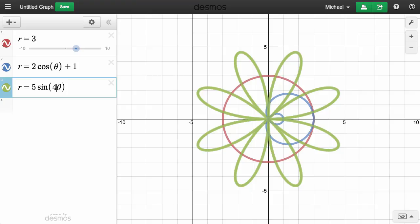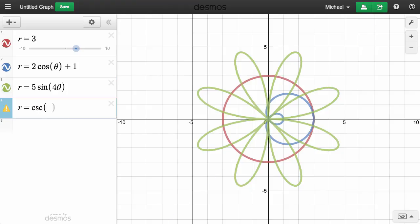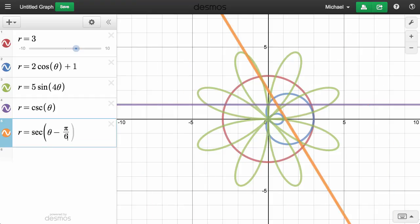You can also graph lines like r equals cosecant theta or r equals secant theta minus pi over 6.